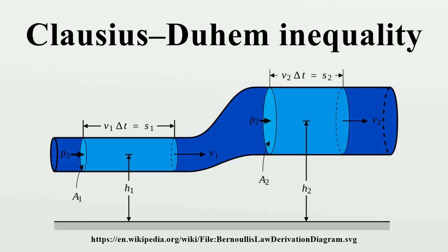The quantity is called the dissipation, which is defined as the rate of internal entropy production per unit volume times the absolute temperature. Hence the Clausius-Duhem inequality is also called the dissipation inequality. In a real material, the dissipation is always greater than zero.